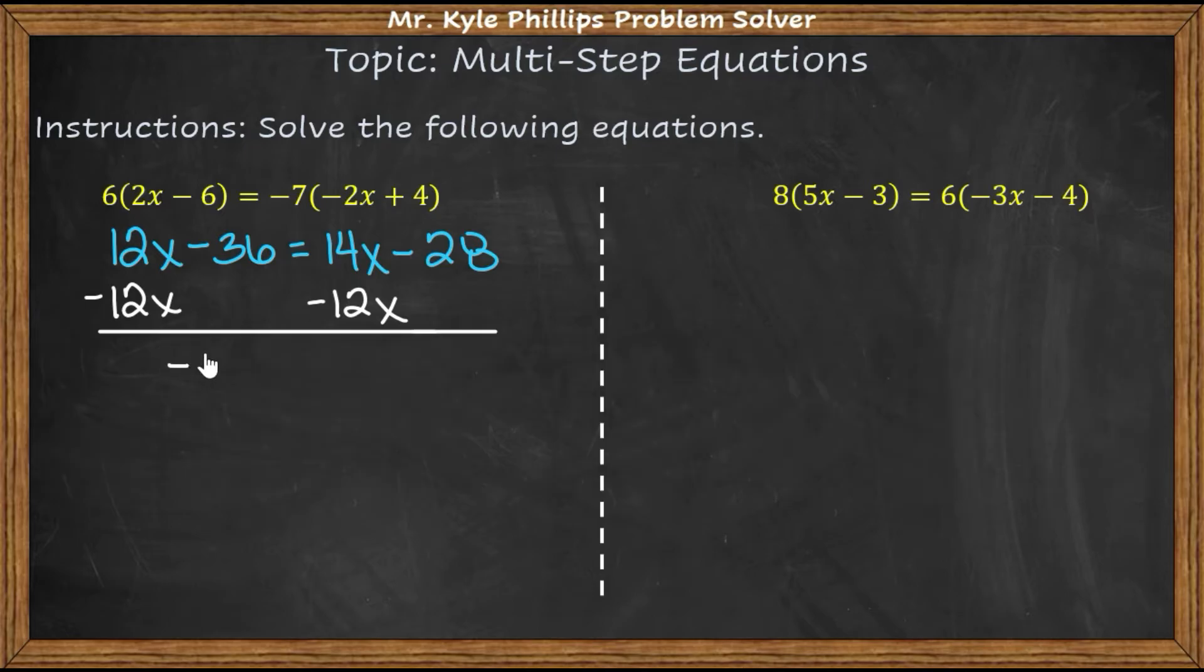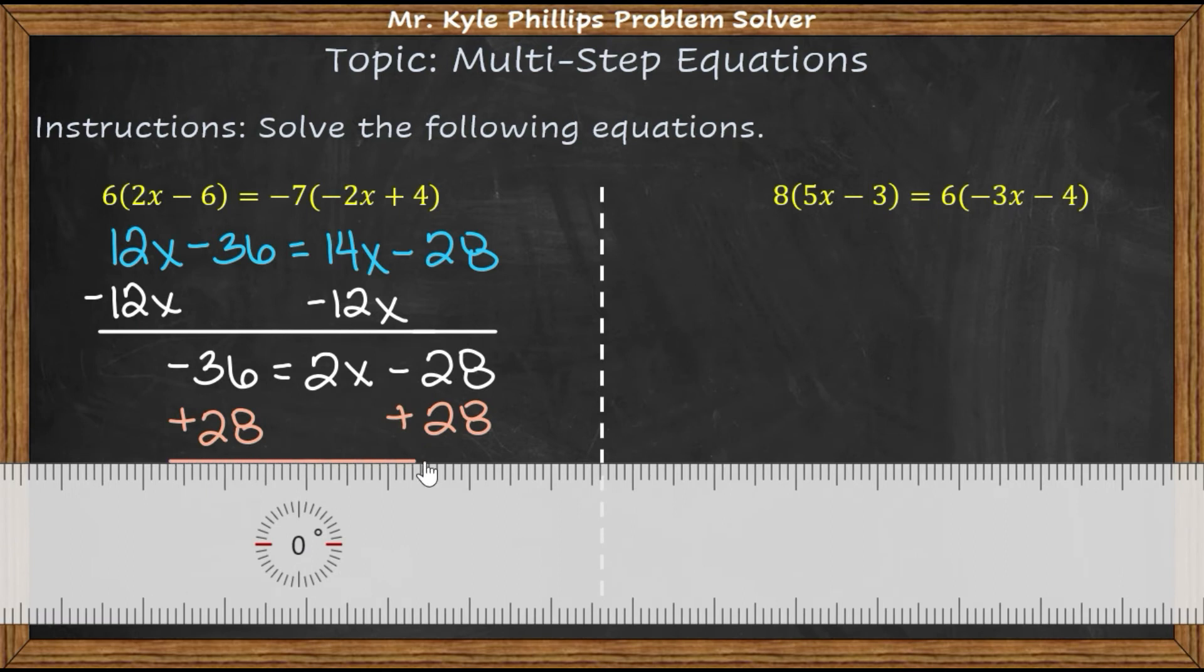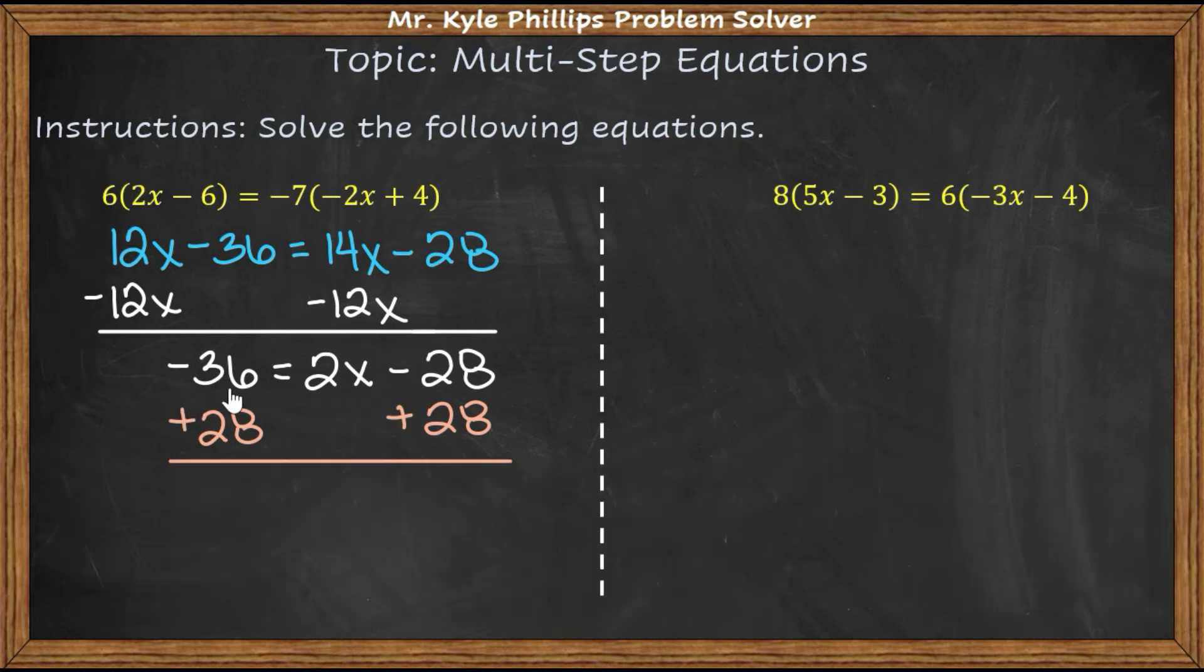And this gives me negative 36 equals 2x minus 28. And then I will add 28 to both sides. Negative 36 plus 28 is going to give us negative 8. And this equals 2x. And when I divide by 2 I'm going to get negative 4 is the value for x.